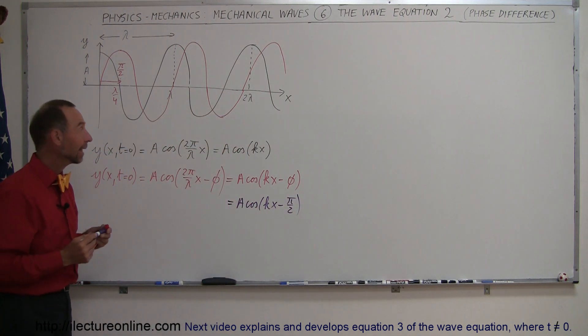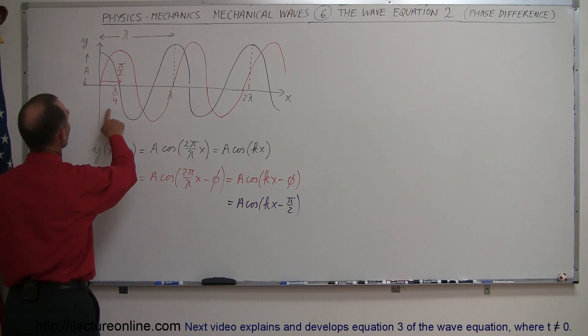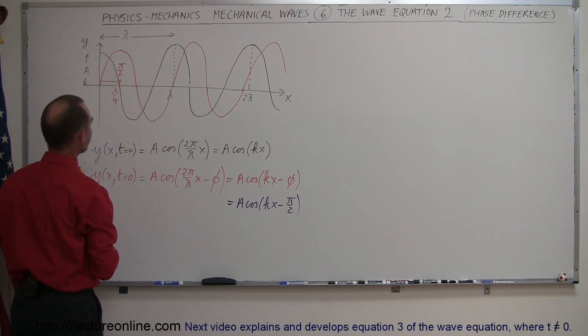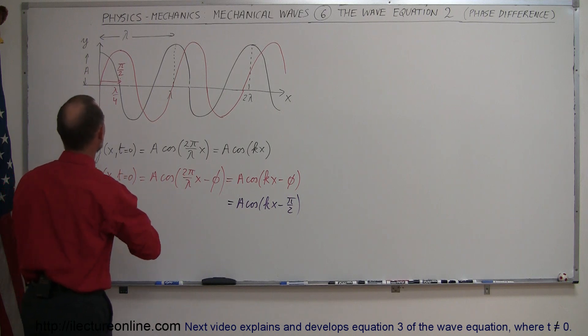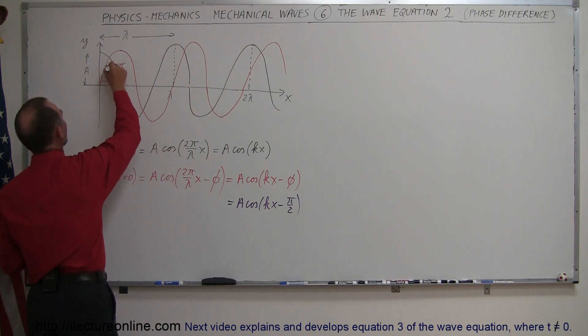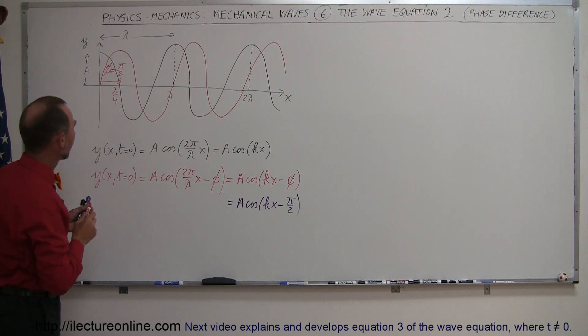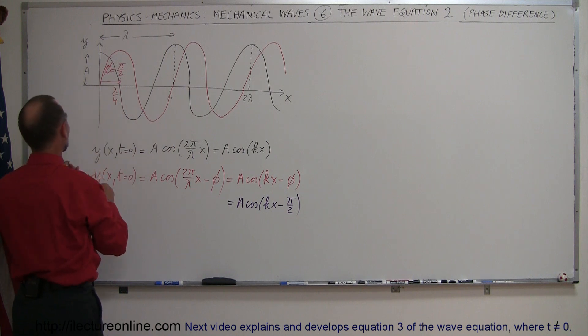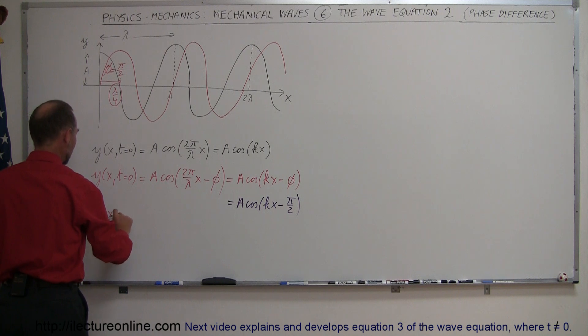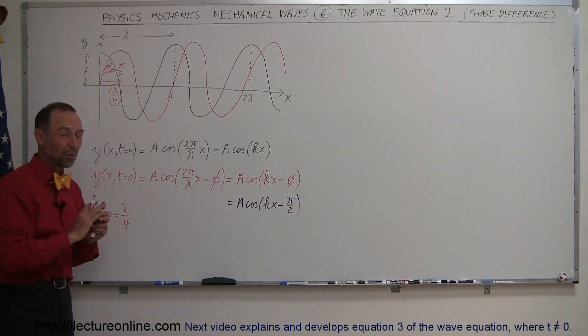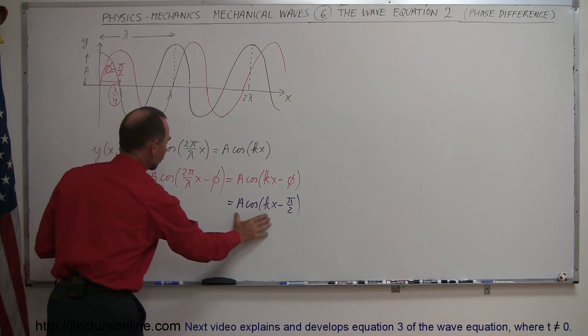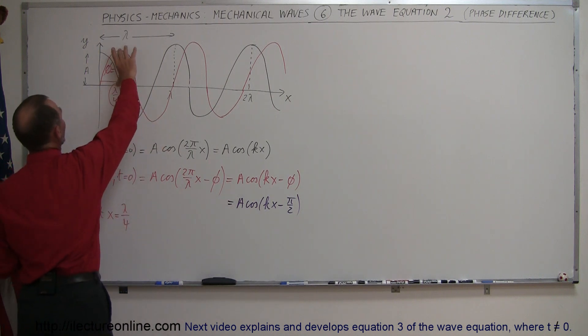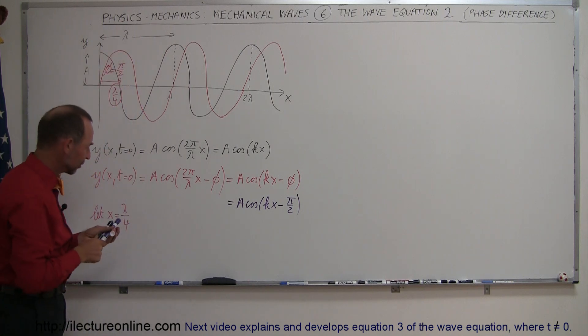Now, notice that let x equal, for example, pi over 2. That would be the phase difference. And let me make sure that we understand that this is the phase difference. So if x is equal to, well, I shouldn't say x equal pi over 2, I should say if x is equal to lambda over 4, a quarter of a wave. So let x equal a quarter of a wave, which is the amount that we move the wave to the right. What would this be equal to? Now, notice that we expect to find the cosine of that angle to be equal to 1 and the total amplitude to be equal to a. So let's see if that is indeed correct.